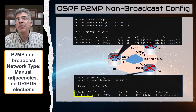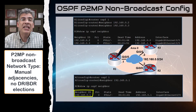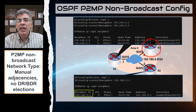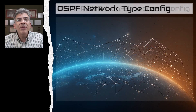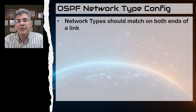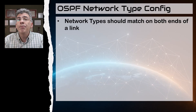You can see the single neighbor adjacency found in R2; the same would be seen if we looked at R3 as well.